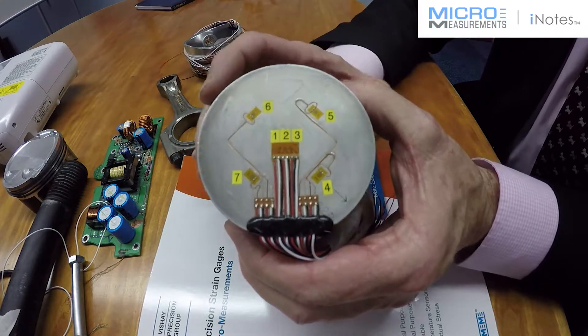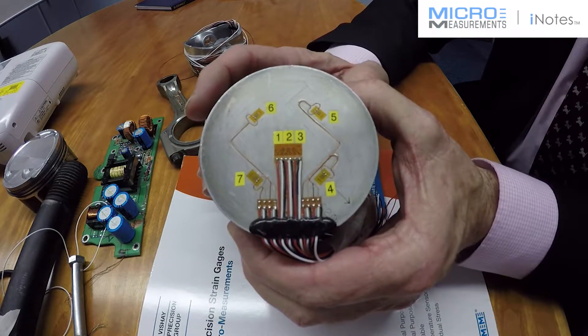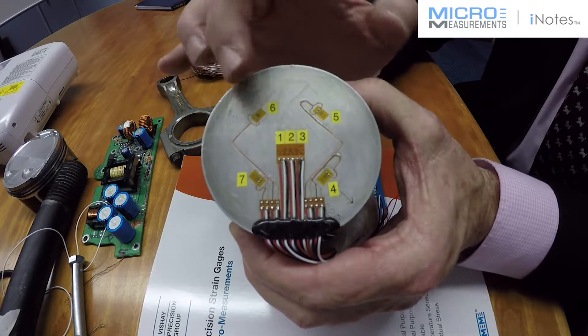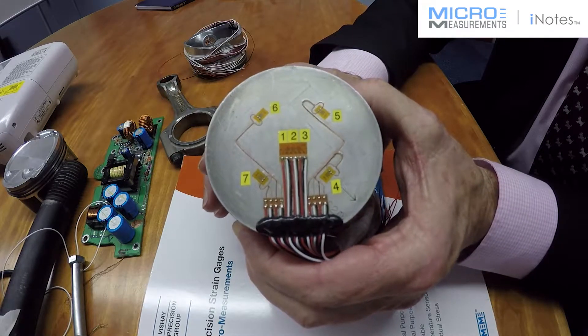The rosette is a primary measurer because it's keeping an eye on the principal strain direction, how it's changing during that process, and how it relates to the other four gauges which are on the surface of the piston.